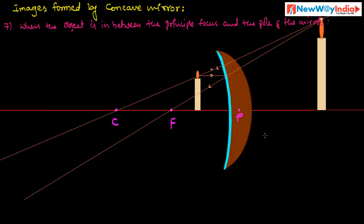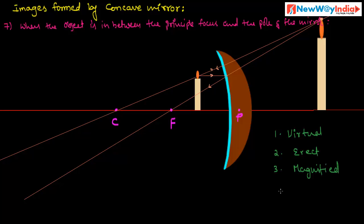The characteristics of this image are different from the remaining six cases. It is a virtual image because it is formed beyond the mirror. It is erect, and it is magnified. This is the case where a virtual image is formed behind the concave mirror.